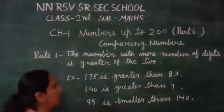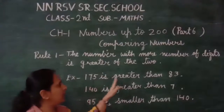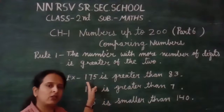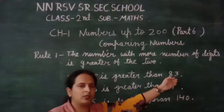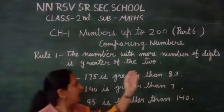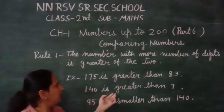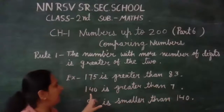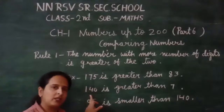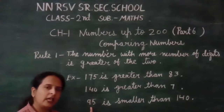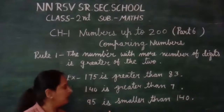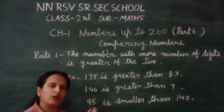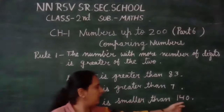Here are some examples. 175 is greater than 83, because 175 is a 3-digit number and 83 is a 2-digit number. 140 is greater than 7, because 7 is a 1-digit number and 140 is a 3-digit number. 95 is smaller than 140, because 95 is a 2-digit number and 140 is a 3-digit number.